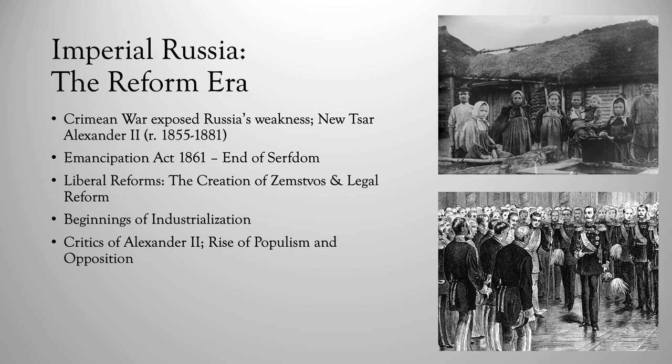Russia did not industrialize as quickly as it had expected to. But beyond the Emancipation of the Serfs, there were other notable liberal reforms from Alexander II. For example, the creation of the Zemstvos. Zemstvos were local assemblies that allowed for a moderate degree of self-government in the little village communities. The Zemstvos essentially replaced the nobility's traditional authority over the serfs. This is a significant step towards popular participation in Russian history. However, Zemstvos did not have any influence on national policy — they were strictly local governments.